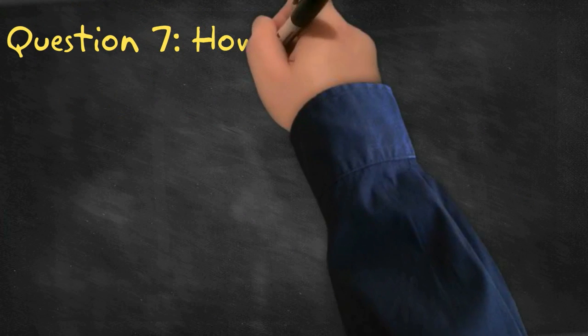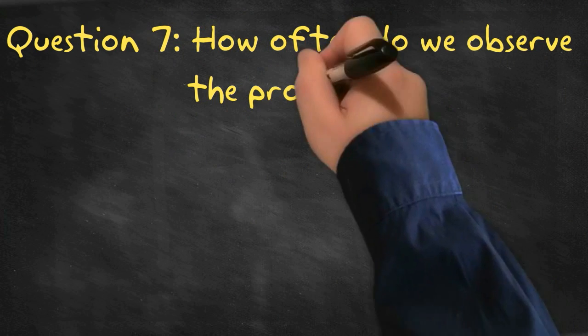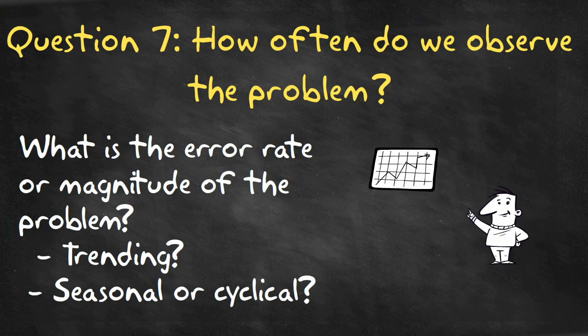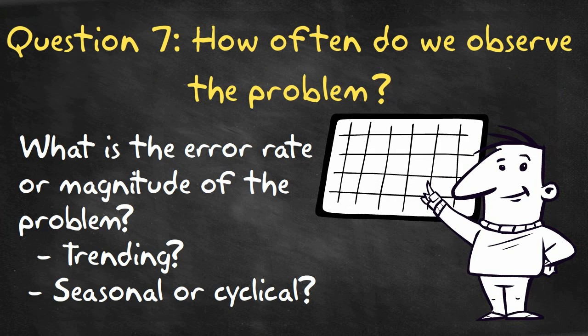Question number seven: How often do we observe the problem? What is the error rate or magnitude of the problem? Is there a trend present? Does it only occur in certain seasons or is there a cycle that you can associate with the problem?